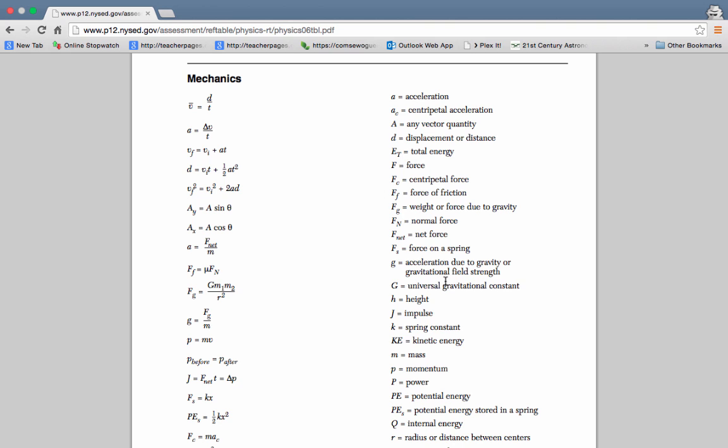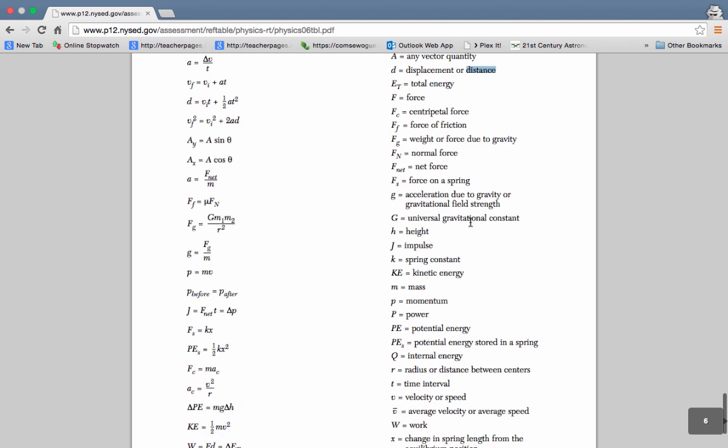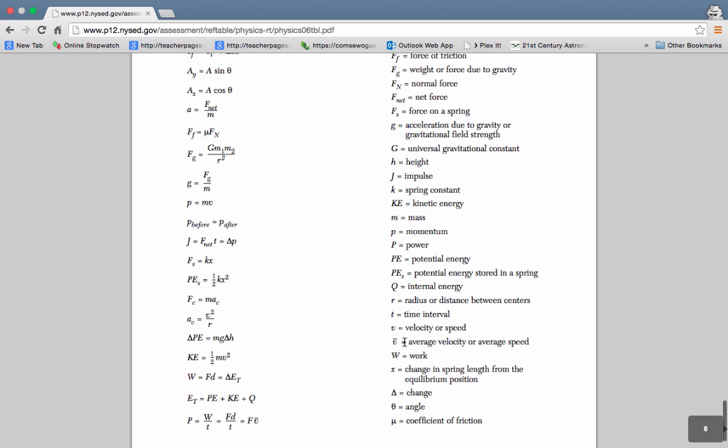Notice, too, here, that distance may either be or D may either represent displacement or it may represent distance. If I scroll down a little bit further down here, you can see that V with a bar over the top of it represents either average velocity or average speed.